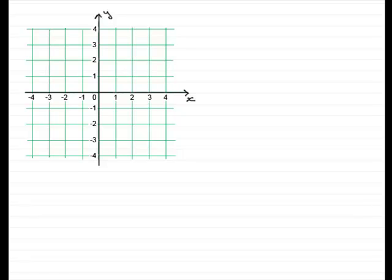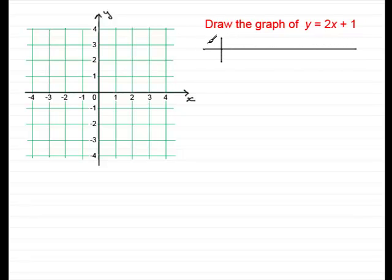Hi, welcome to this video on the equation of a straight line. Suppose we are asked to draw the graph of y equals 2x plus 1. What I do is draw up a table of values for x and y. We'd need a set of values to put into this graph. Let's draw it from minus 3 up to 2.